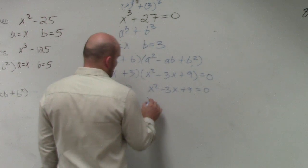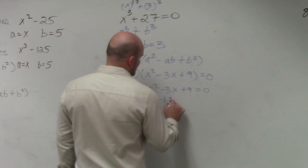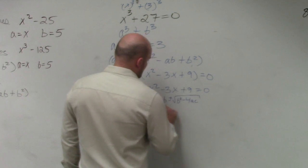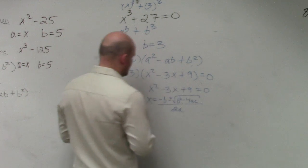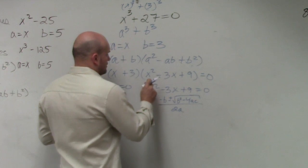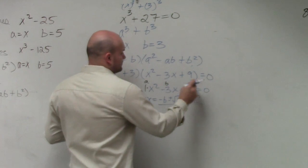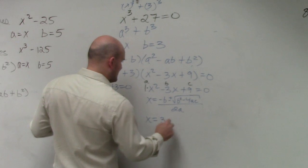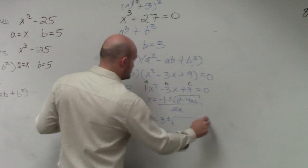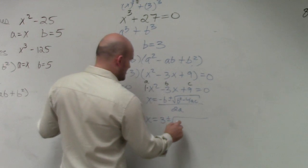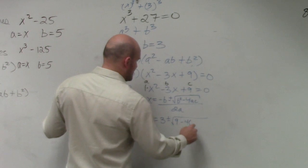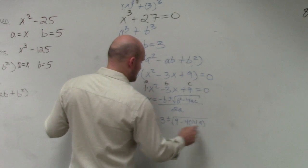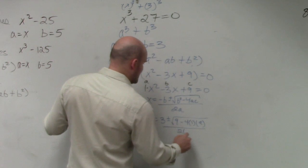So x equals opposite of b plus or minus square root b squared minus 4 times a times c, all over 2 times a. a, b, and c. x equals opposite of b, which would be positive 3, plus or minus square root b squared, which is going to be a positive 9, minus 4 times a, which is 1, times c, which is 9, all over 2 times a, which is 1.